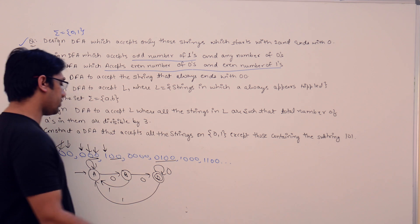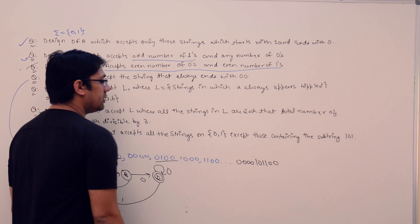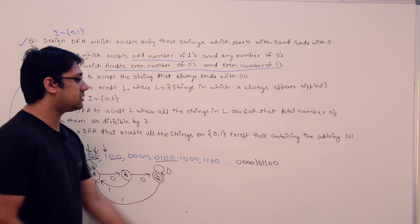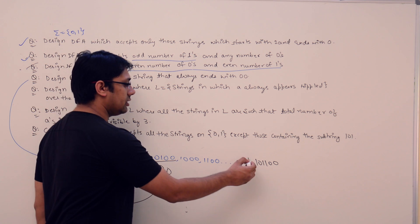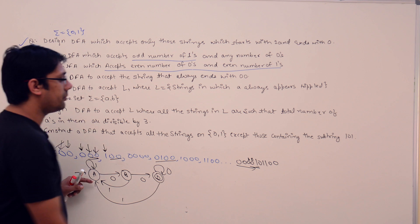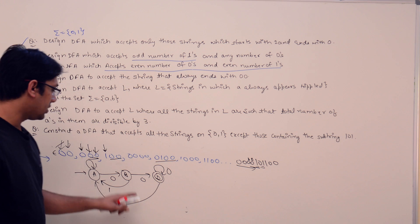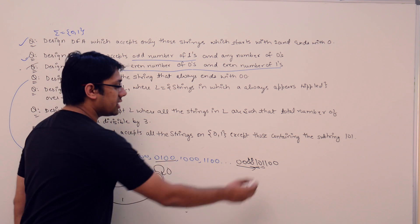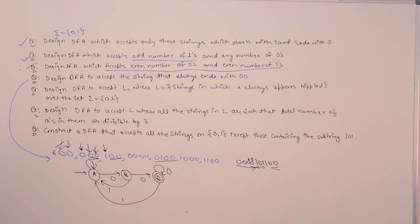For example, if you have the string 0000000100110 00, from all the beginning 0s we transition from state A to state D. We stay at state D. As soon as we get a 1, we transition from D to A. By looking at a 0, we transition from A to B. By looking at two 1s, we stay at state A. By looking at the last two 0s, we transition from A to D. After reading the complete string, if we are at the final state, the string is accepted.